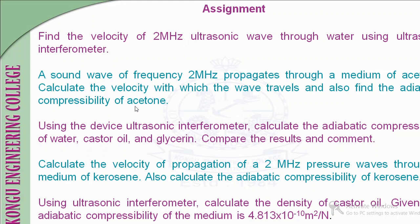Assignment 3—using the ultrasonic interferometer, calculate the adiabatic compressibility of water, castor oil, and glycerin; compare the results and give your comments. Take readings three times with each liquid in the measuring cell and compare the compressibility values. Assignment 4—calculate the velocity of propagation of a 2 MHz pressure wave through kerosene and also find the adiabatic compressibility of kerosene. Replace water with kerosene in the measuring cell. (A pressure wave / sound wave is ultrasonic if its frequency exceeds 20,000 Hz.)